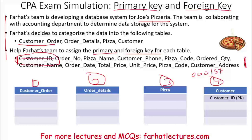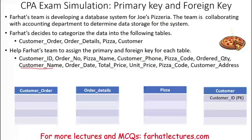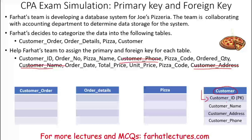We are done determining the primary key for the customer table. What else would we include under customer data? We don't include the order number or the pizza name — we're looking for customer information. We include the customer phone, the customer name, and the customer address. We can also include emails and anything else we want to learn about this customer. So this is the customer table — any information about a customer is here, and every customer is identified by their primary key: customer ID.